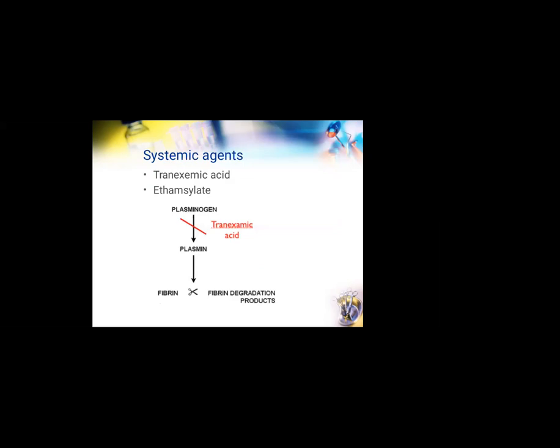Coming to some systemic agents: tranexamic acid prevents the conversion of plasminogen to plasmin. Plasmin acts on fibrin and causes breakdown of the clot — since fibrin is necessary for stabilization of the clot, tranexamic acid prevents this degradation step and thereby helps in hemostasis. Ethamsylate helps in platelet aggregation and reduces capillary fragility.